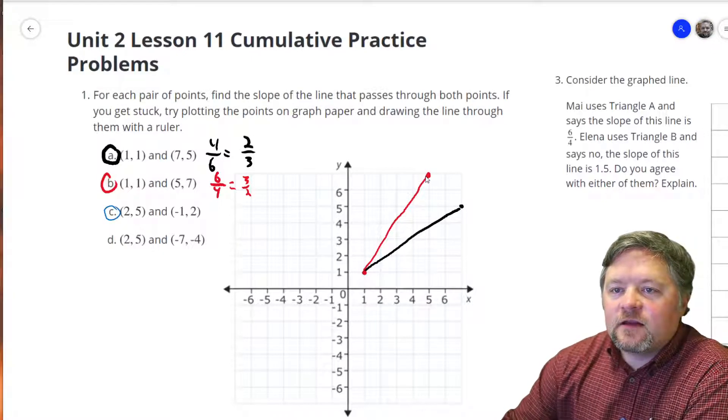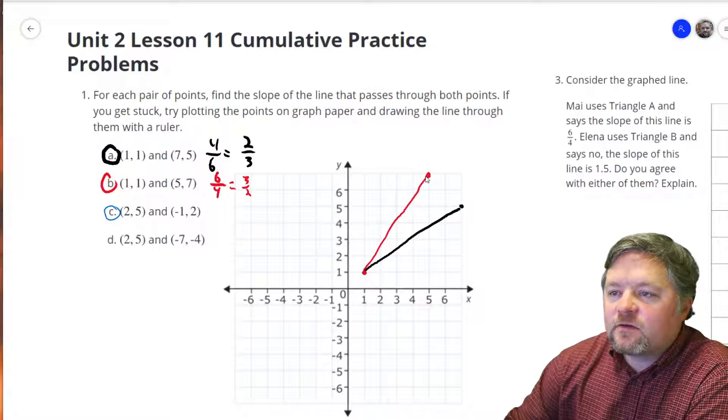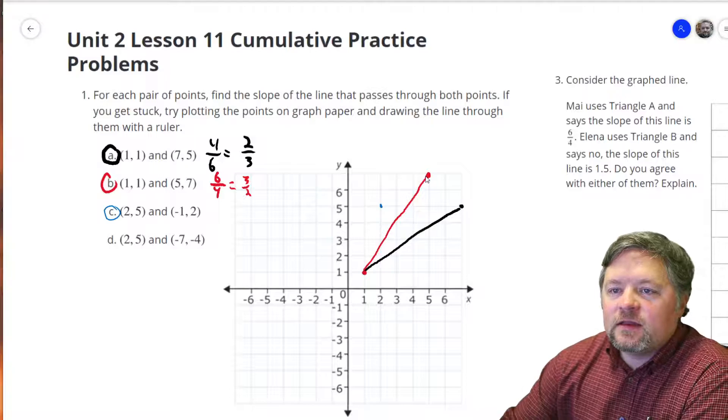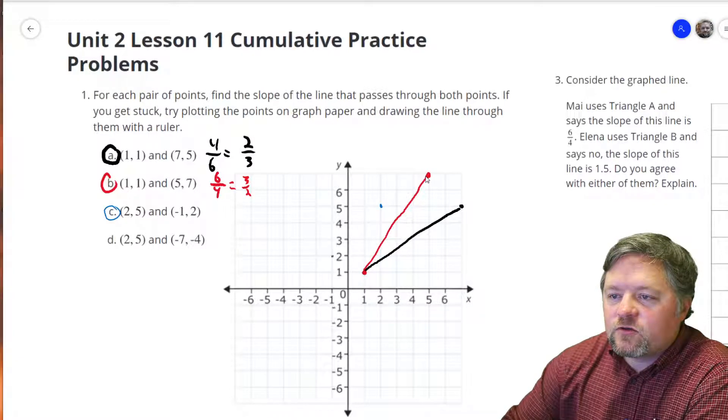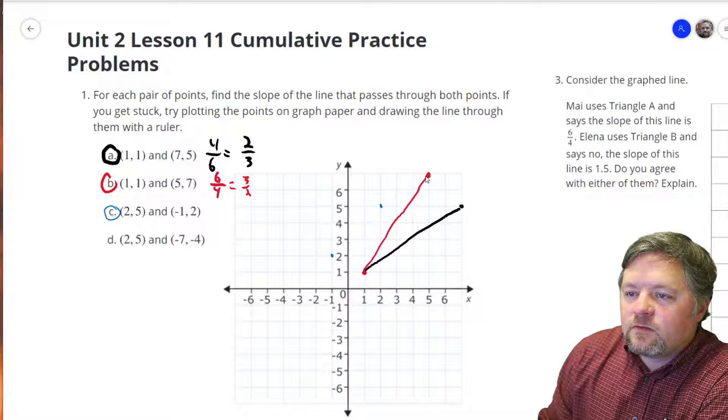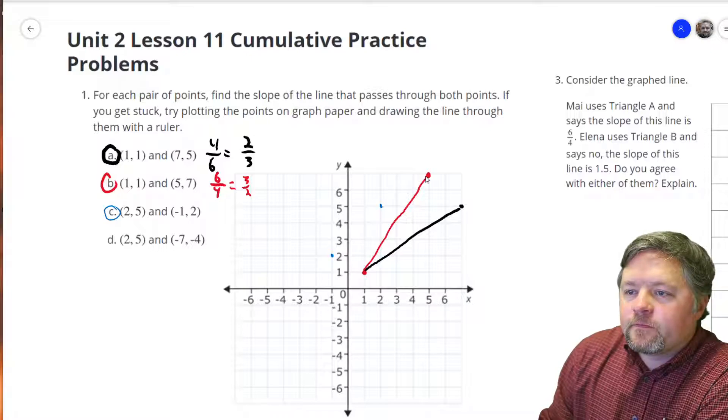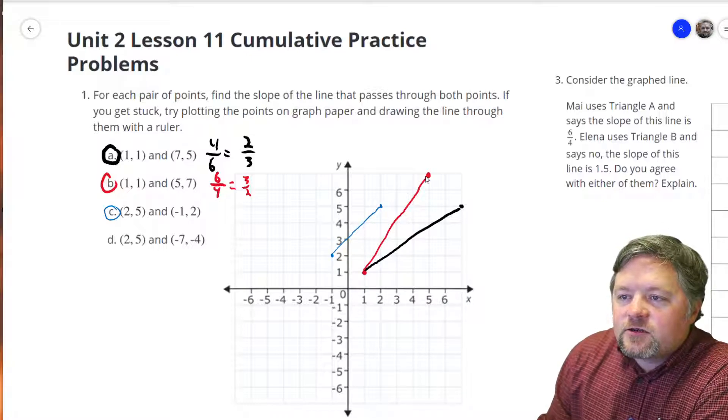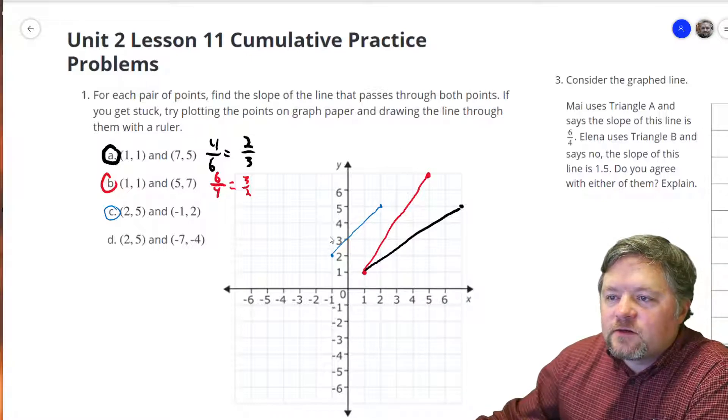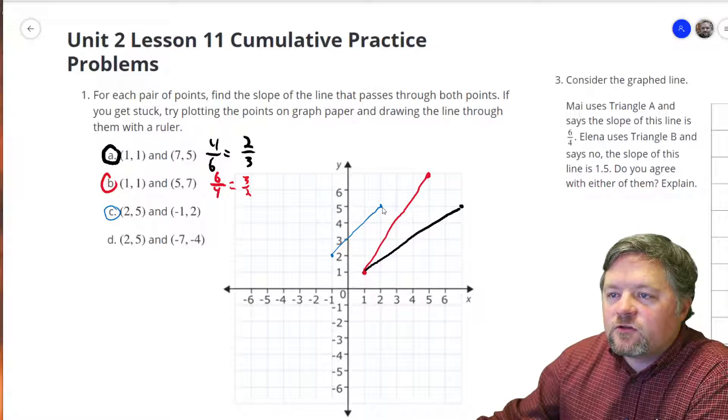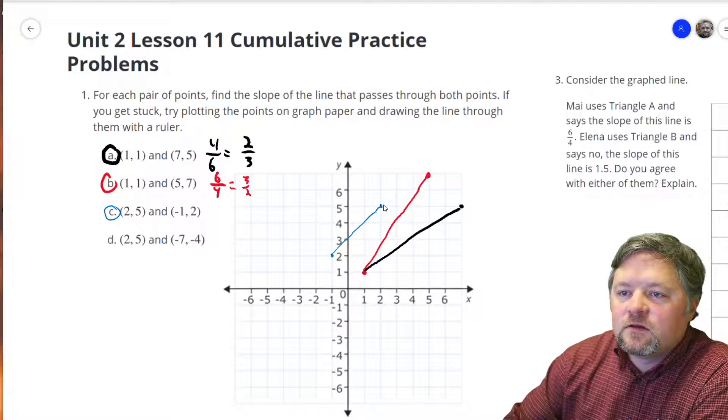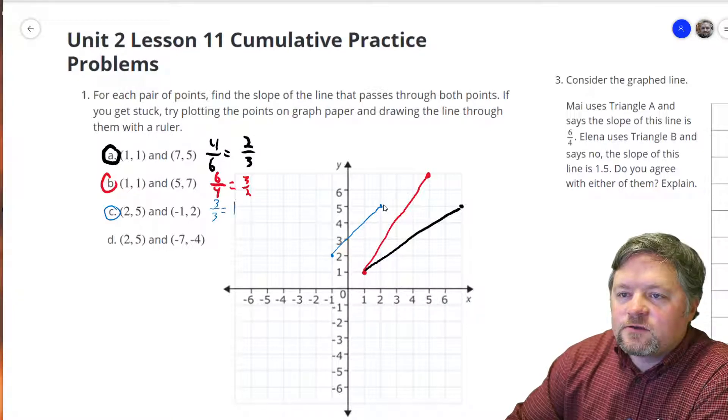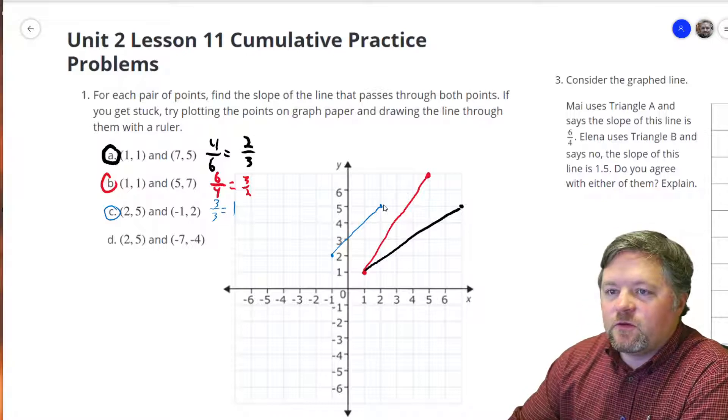Our next one goes through the point 2, 5, 2, 5, and negative 1, 2. So now we've got a rise of 1, 2, 3, and a run of 1, 2, 3. 3 over 3, which is 1, slope of 1.